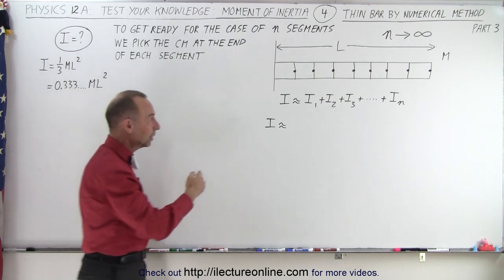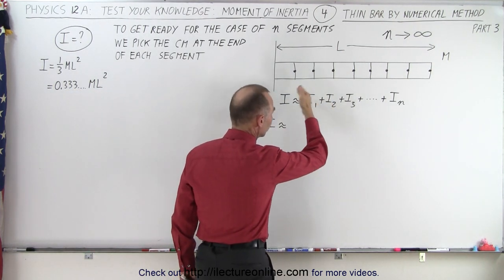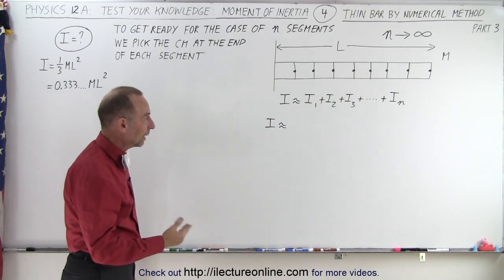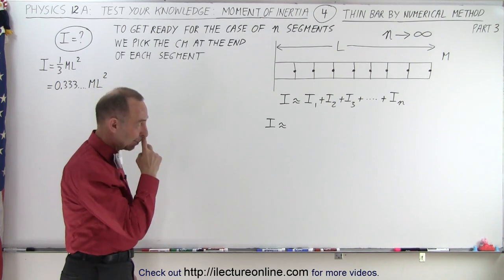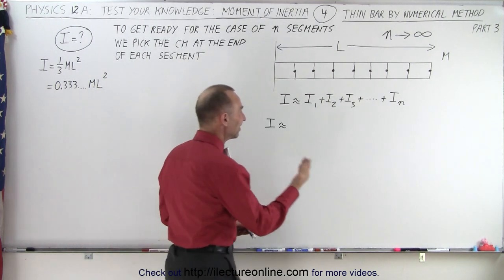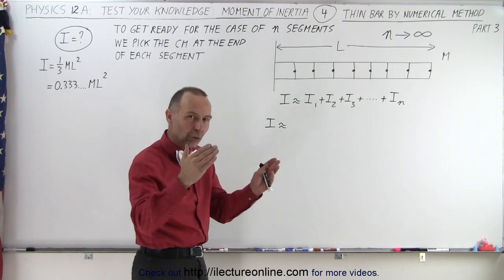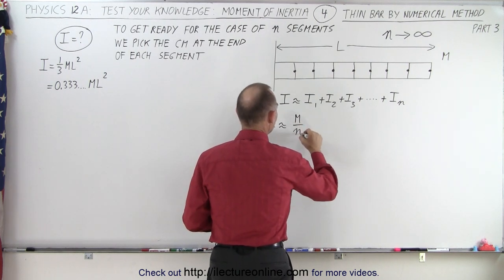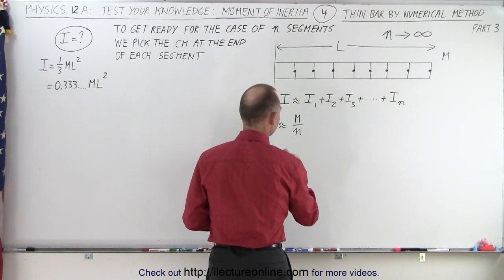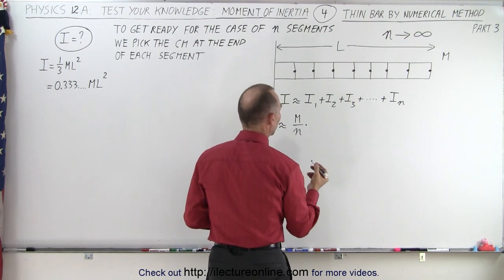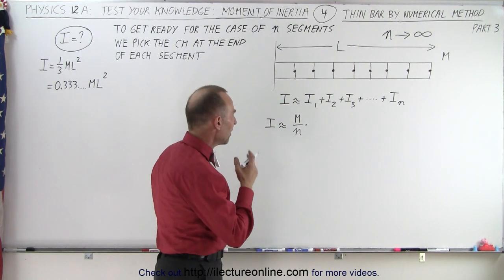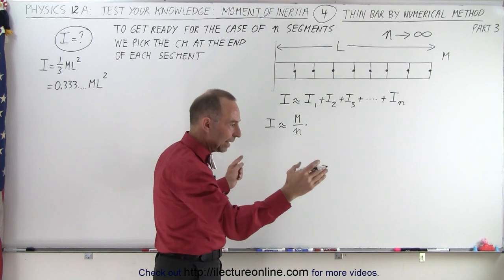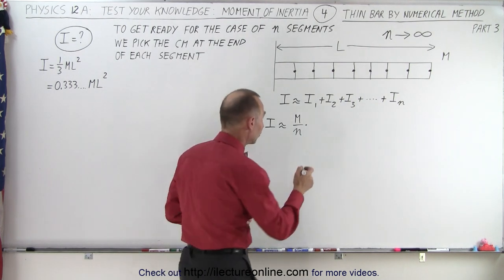We're going to add up all the sections I₁ — we're going to find the moment of inertia of each section. There's going to be n number of sections, and in the end we're going to go to the limit when n goes to infinity. If we have n segments, then each segment will have a mass of the total mass divided by n, so that means m divided by n is the mass for each segment. Then we have to multiply that times the distance squared, so it'll be the length L divided by the number of segments n, and we have to square that.